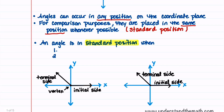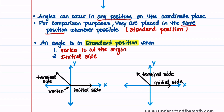An angle is in standard position when two things happen. The first thing is that the vertex of the angle is at the origin. The second requirement is the initial side of the angle is along the x-axis. And when those two requirements are met, we say that an angle is in standard position.